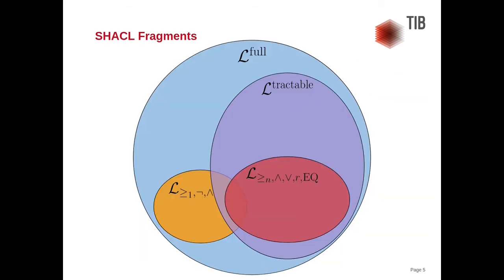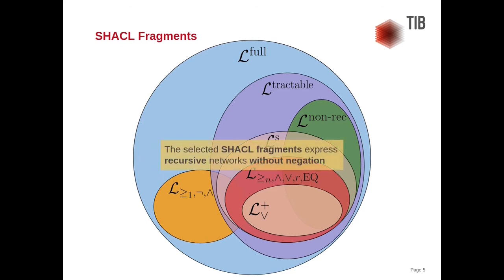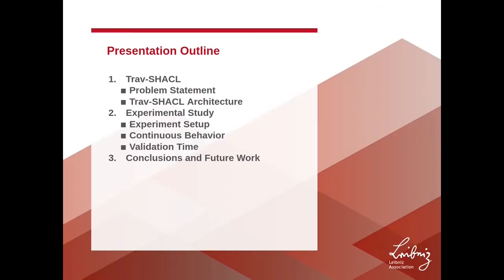There are many fragments of SHACL. Some of them are tractable while others are not. In our work, we focused on three tractable fragments of SHACL. Even though they limit the expressiveness of SHACL, they should still cover most real-world use cases. The selected SHACL fragments express recursive networks without negation. Today, I will present our approach named Draft SHACL, followed by the experimental study, and close with conclusions and future work.